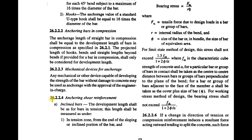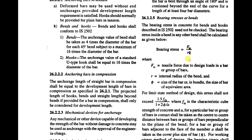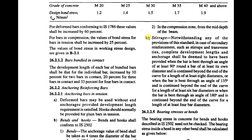Now let's look into Clause 26.2.2.4 — anchoring shear reinforcement. We need to look into Section B, which covers stirrups. In case of secondary reinforcement such as stirrups and transverse ties, complete development length and anchorage shall be deemed to have been provided. Transverse reinforcement is secondary reinforcement; the longitudinal bars are the main reinforcement.